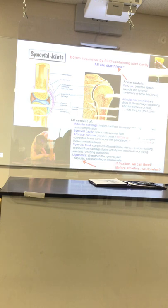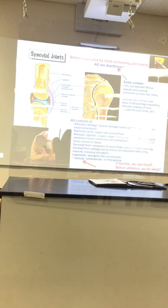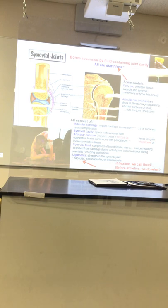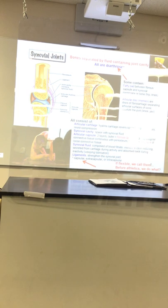Some synovial joints have other things as well — like menisci. Your knees are synovial joints that have intervening pads of fibrocartilage. You can see in the image the meniscus — those little cups where the femur fits against the tibia. If you tear your meniscus, doctors may remove it or these days they're sometimes replacing it with space-age polymers.